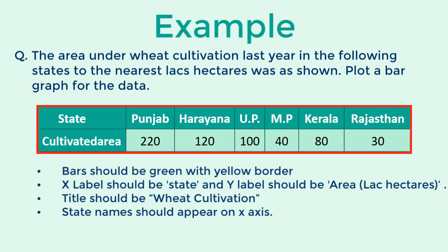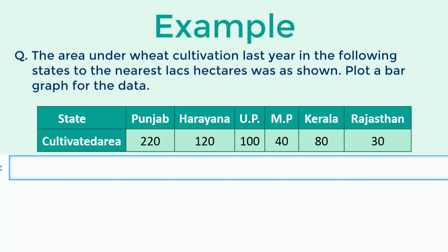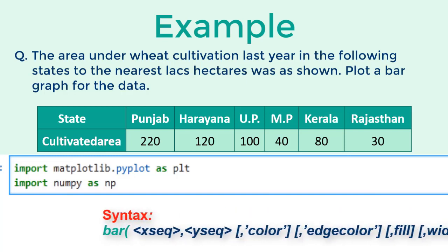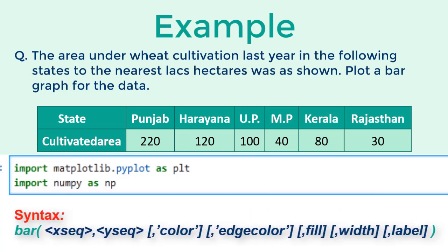Here, area cultivated in different states are shown. You have to draw a bar graph in green with yellow border and labels and ticks. Let's look at how we will make this graph. First thing you need to do when you are using pyplot is to import it in your program. So we will do that first. Now let's look at the syntax of making a bar graph.